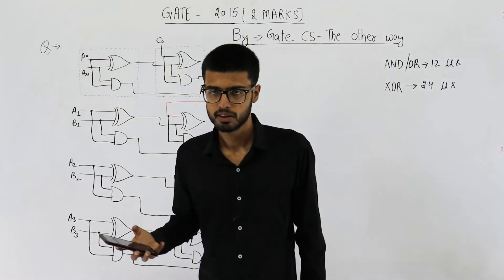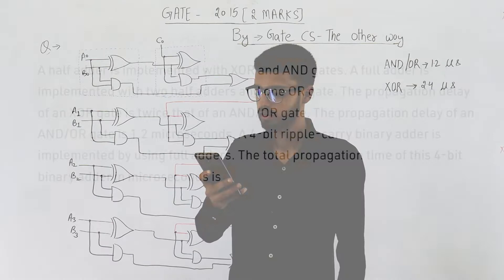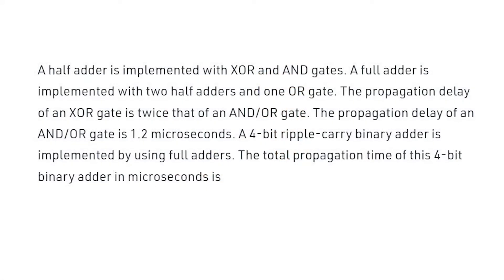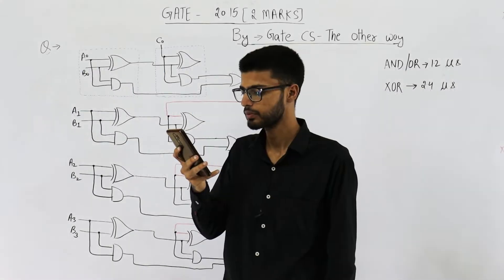Let's first read the statement. It says: a half adder is implemented with XOR and AND gates. A full adder is implemented with two half adders and one OR gate. The propagation delay of an XOR gate is twice that of an AND/OR gate. The propagation delay of an AND/OR gate is 1.2 microseconds. A 4-bit ripple carry binary adder is implemented using four full adders. The total propagation time of this 4-bit binary adder is how many microseconds?